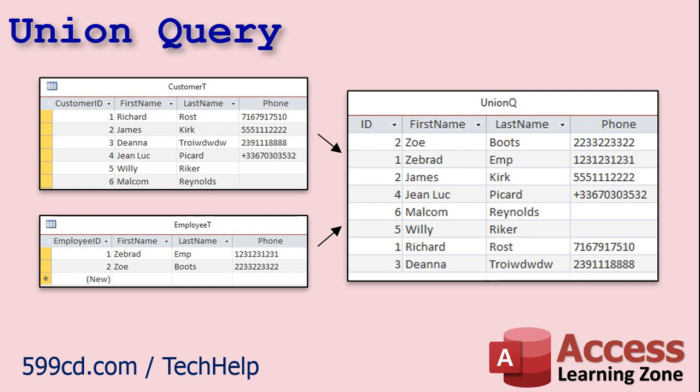The tables have to have similar fields like first name, last name, phone number. The ID fields, as you'll see, will be different, but that's okay — we'll just call them ID in the resultant table. This way you can make one set of mailing labels, one set of reports, if everything's the same.